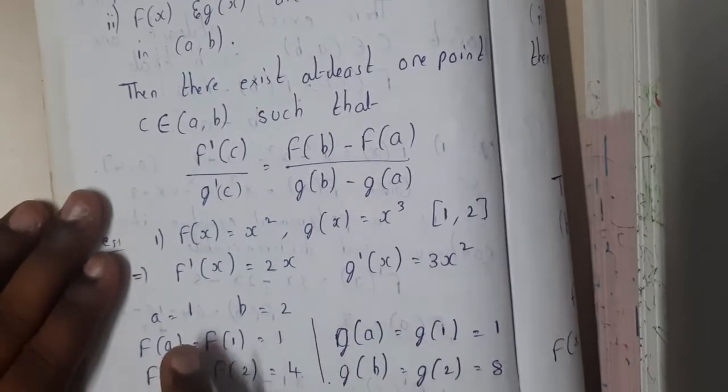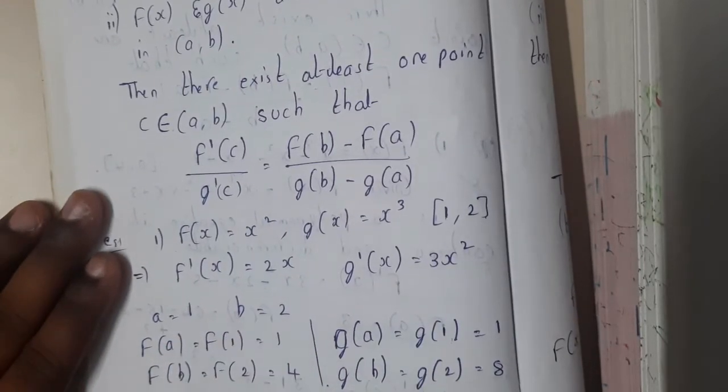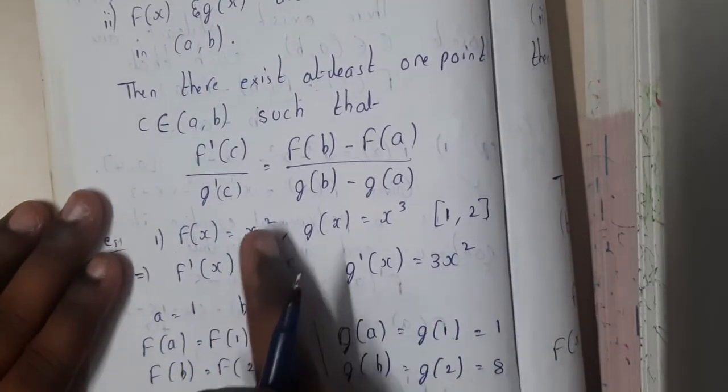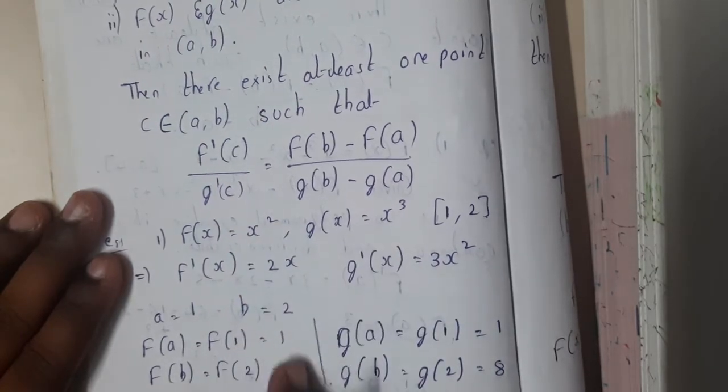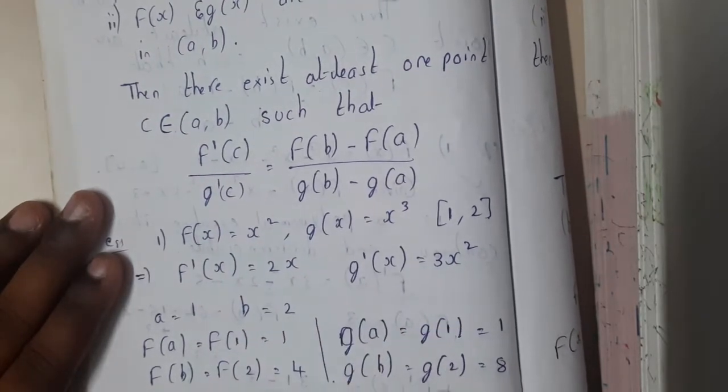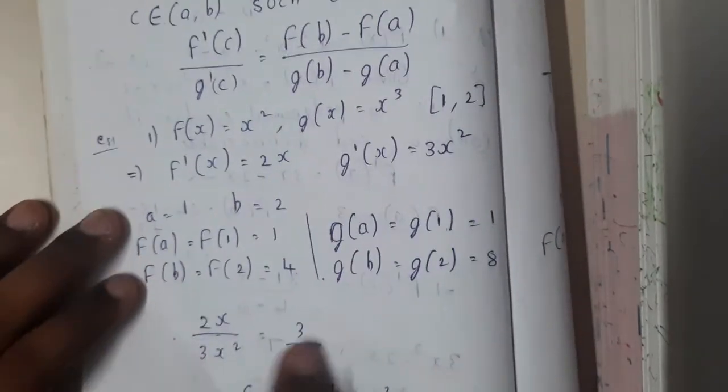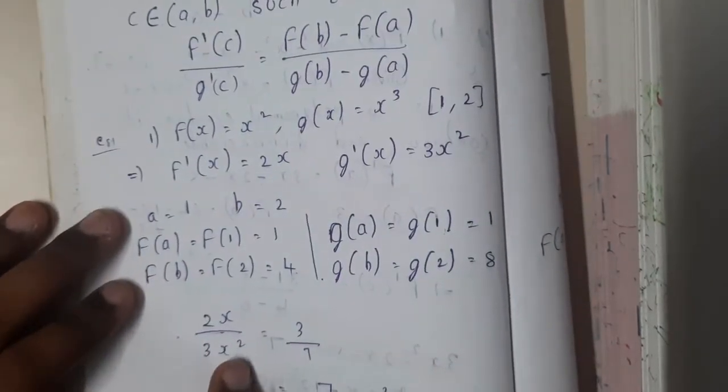Now substitute the values of a equal to 1 and b equal to 2. You substitute in this and in this also, so we got 1 and we got 4. In this we will be getting 1 and 8. Now substitute these values into our equation: 2x by 3x square is equal to 3 by 7.